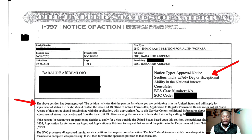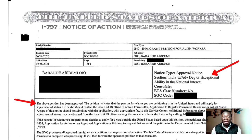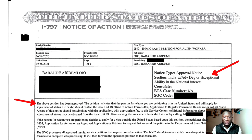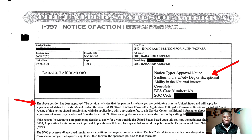Usually what happens after this is your immigrant petition has been approved, and all you have to do is take this form along with other documents to another office where they will process your green card. So this is what the NIW approval looks like if you get it.